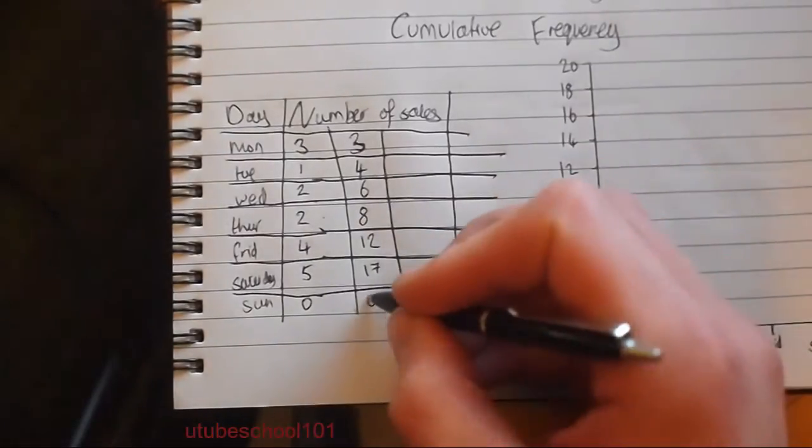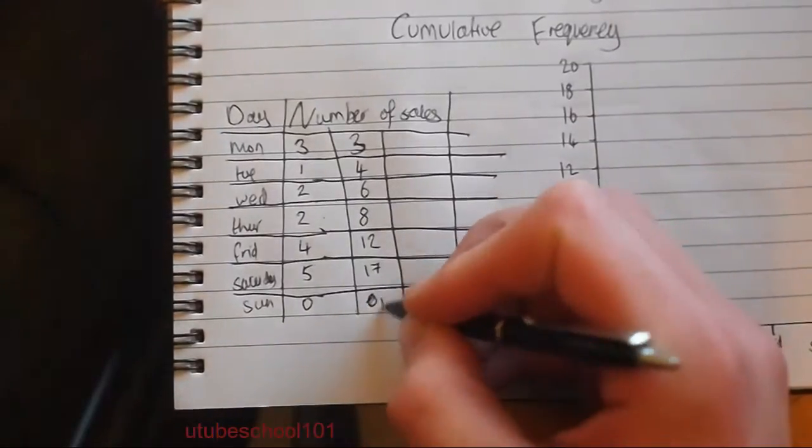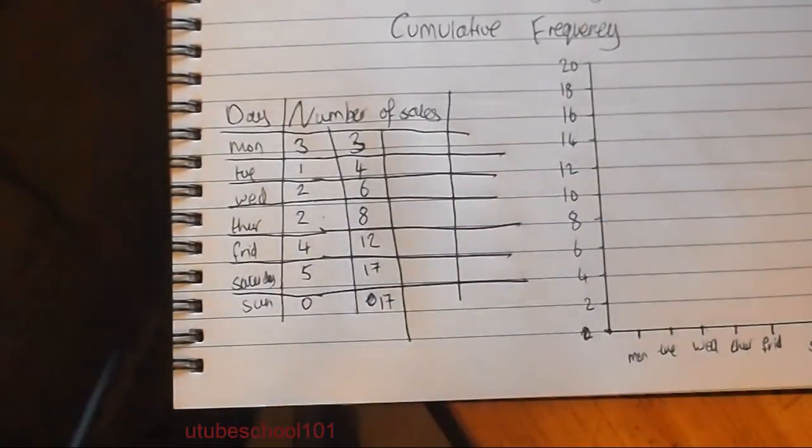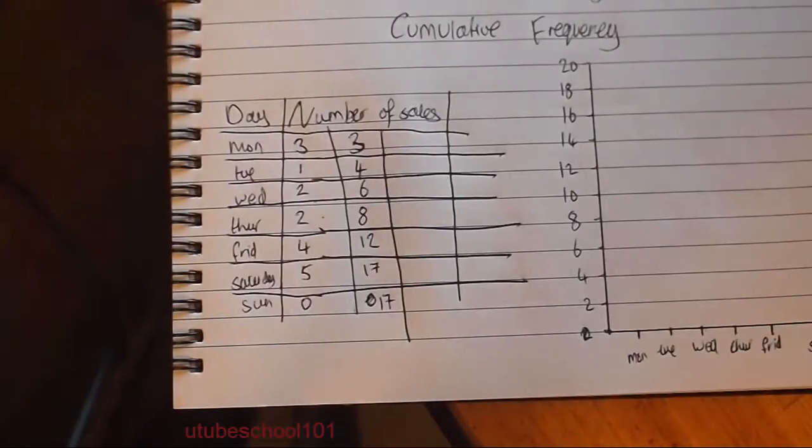Sorry — that's going to be 17. It's an easy mistake to make. It's 17. 17 add 0, it's still 17.